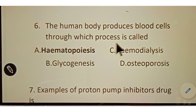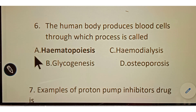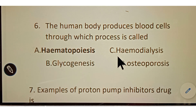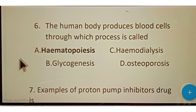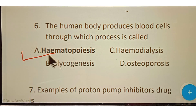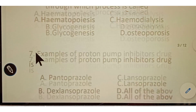Question number six: the human body produces blood cells through which process? Options given: A. Hematopoiesis, B. Glycogenesis, C. Hemodialysis, D. Osteoporosis. The correct answer is option A, Hematopoiesis.